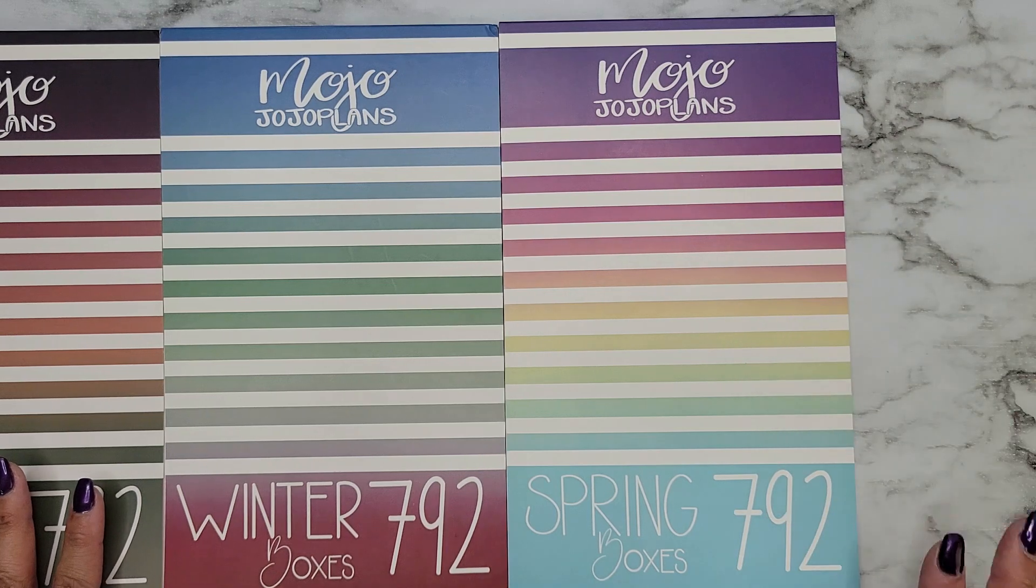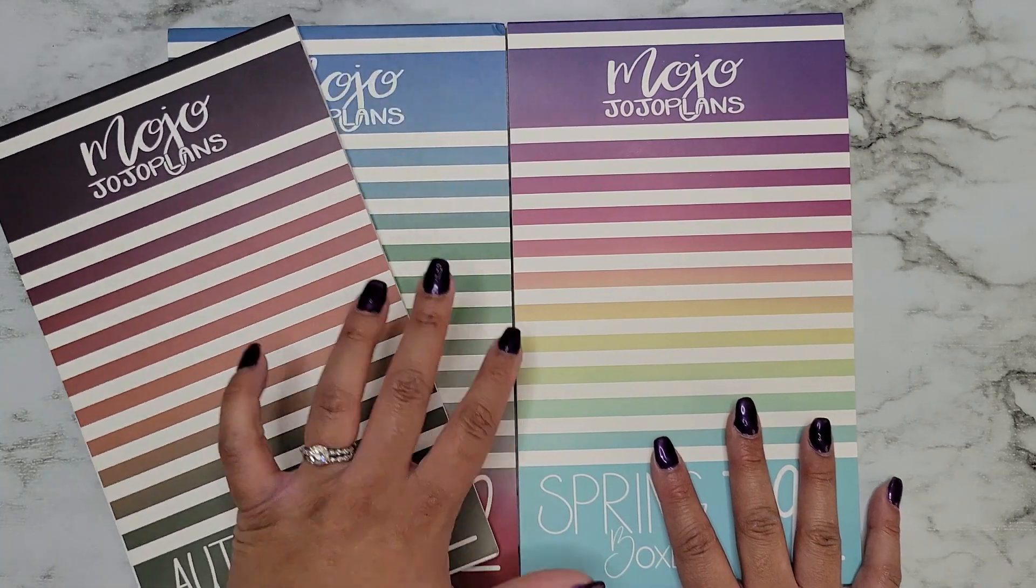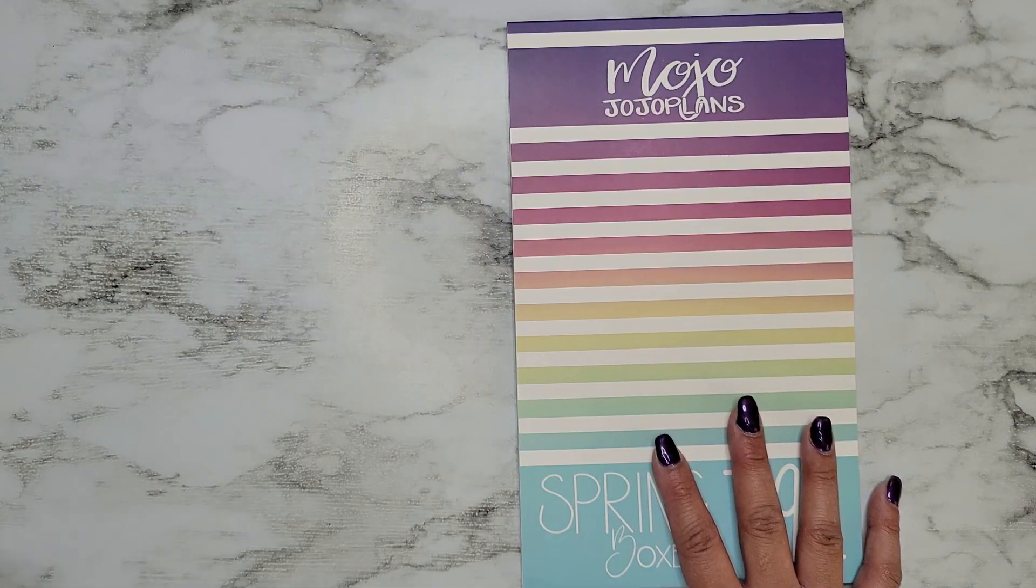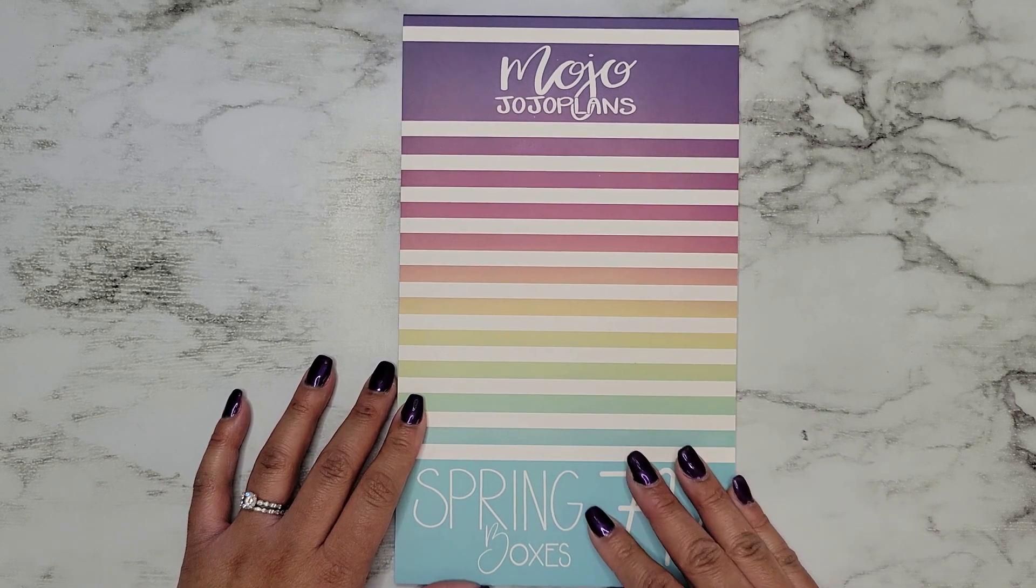If that tells you anything, that might mean there's a fourth one coming to complete this set. It's going to have the exact same layout as Autumn and Winter Boxes. This book releases on Friday, February 4th at 9 a.m. Mountain Standard Time.